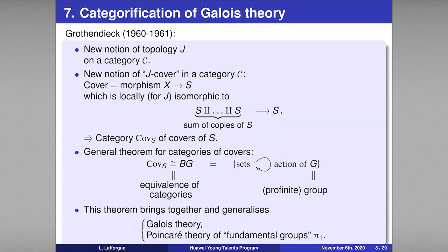When you have a group, you can consider sets endowed with an action of the group, and this defines a category. Grothendieck showed that categories of covers are equivalent to categories of this type. In doing so, he unified two of the most important theories of mathematics — Galois theory on one hand, and Poincaré's theory of fundamental groups on the other — proving that these two theories are, in fact, only one. This extended the scope of Galois theory incredibly.